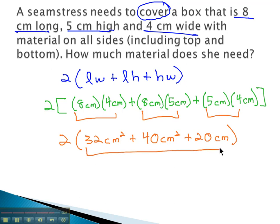We can add that all together next in parentheses. 32 plus 40 plus 20 is 92 square centimeters, because we're combining like terms. And finally, 2 times 92 is 184 square centimeters.